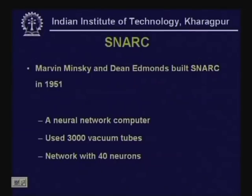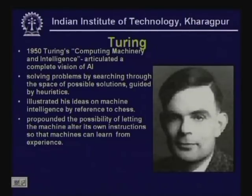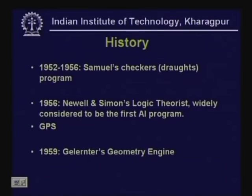In 1943, McCulloch and Pitts built a Boolean circuit model of the brain — a logical calculus for ideas emanating from nervous activity — explaining for the first time how neural networks can compute. Marvin Minsky and Dean Edmonds built the SNARK in 1951, a neural network computer. In 1950, Alan Turing published Computing Machinery and Intelligence, which articulated a complete vision of AI solving problems by searching through a space of possible solutions guided by heuristics, and propounded the possibility of machines altering their own instructions so they can learn from experience.